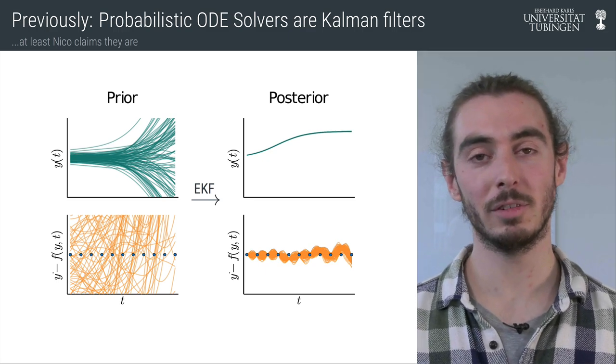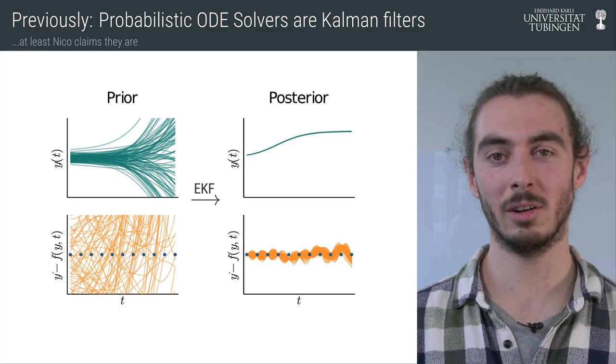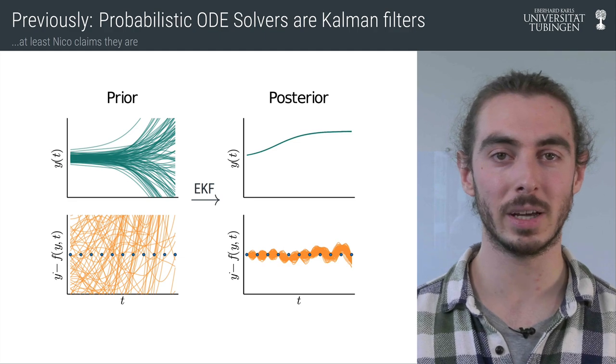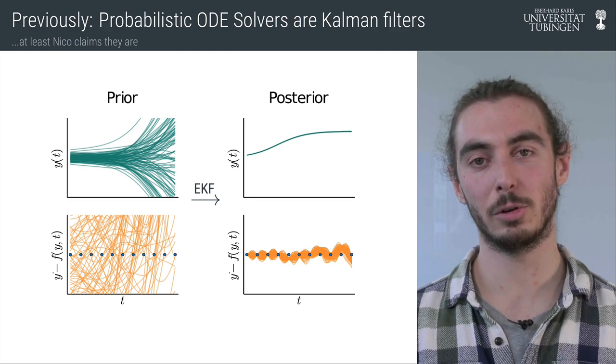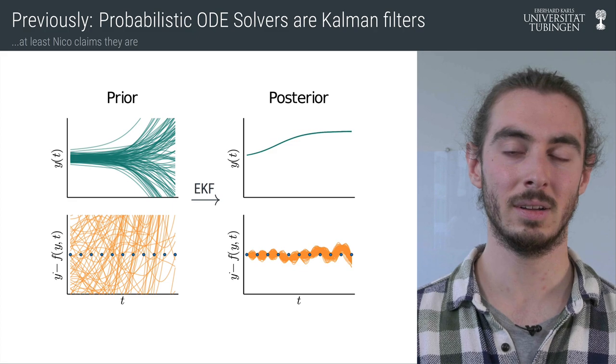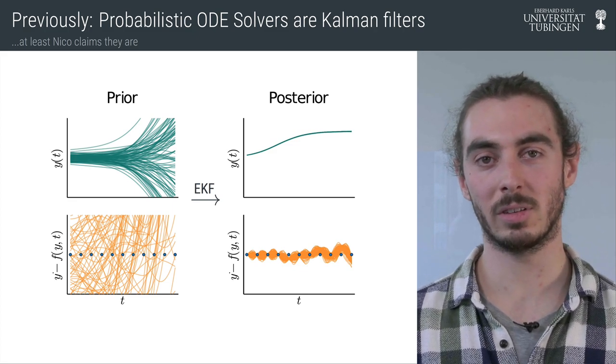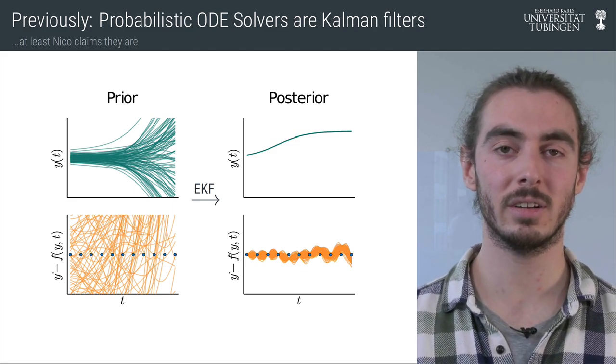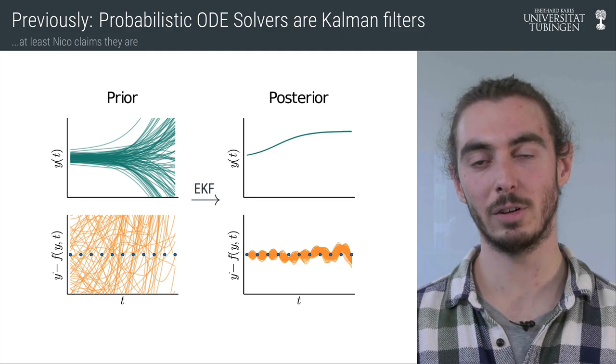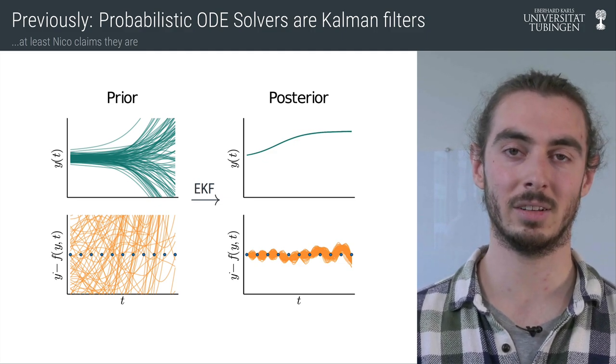So Nico has shown us in the previous video that we can set up a nonlinear regression problem in such a way that the solution to this regression problem is a probabilistic ODE solution. And because we chose Gauss-Markov processes as our priors, we can compute these solutions efficiently with, for instance, the extended Kalman filter.